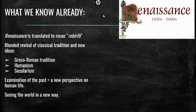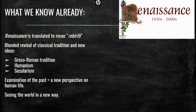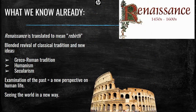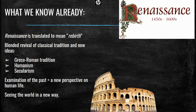So let's start with what we know already. We know Renaissance is translated to mean rebirth, and what that means is it's a revival of classical tradition. When we say classical traditions, we're talking about the traditions of the Greek and Roman cultures, which we refer to as Greco-Roman tradition. We know that during the Middle Ages, Greco-Roman traditions were either lost or suppressed by the church. During the Renaissance period, people had a renewed interest in those traditions and they wanted to go back and explore them.